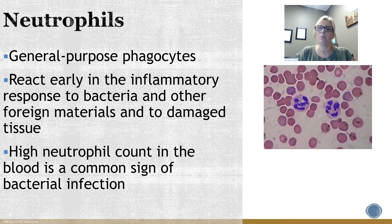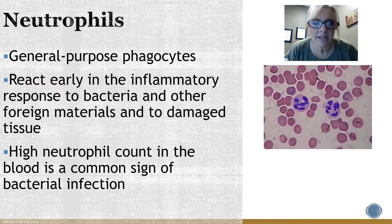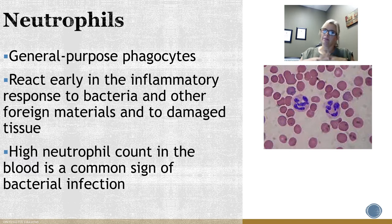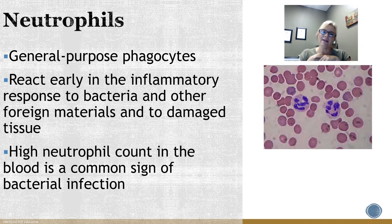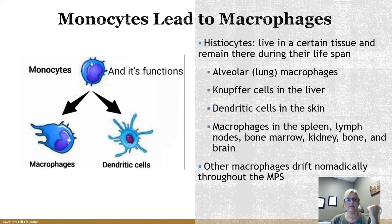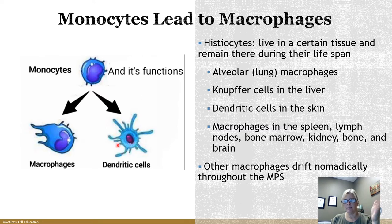Neutrophils are really good general-purpose phagocytes. They react very early in the inflammatory process, especially to bacteria, foreign material, or damaged tissues. They have a limited lifespan in phagocytosis because they produce a toxic form of oxygen to kill bacteria, and then die themselves — it's almost like a suicide mission. If you do a CBC and have a high neutrophil count in the blood, that is a very common indicator of a bacterial infection.